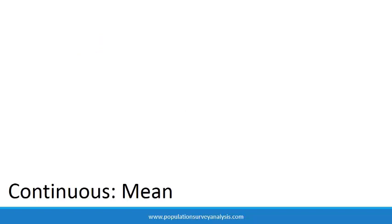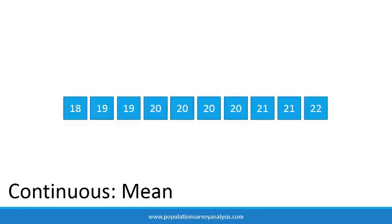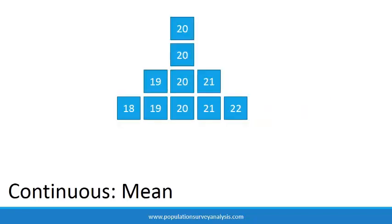Here is an example of a normally distributed variable. These are the ages of ten university students. We see that their ages take on a bell-shaped distribution. When the data are normally distributed, half of the data values are larger than the mean, and half of the data values are smaller than the mean.